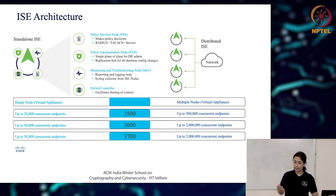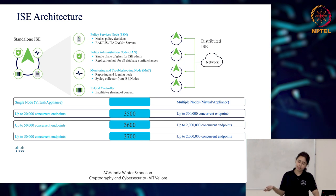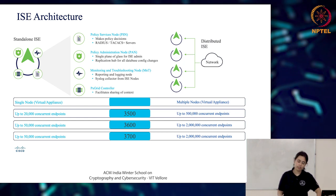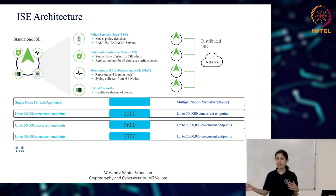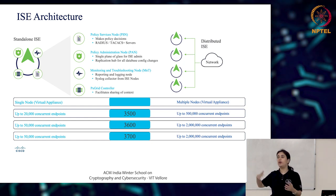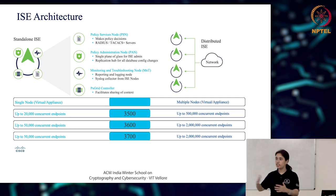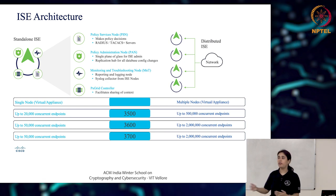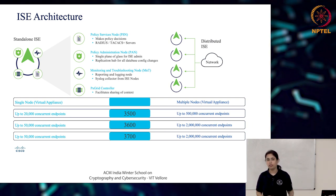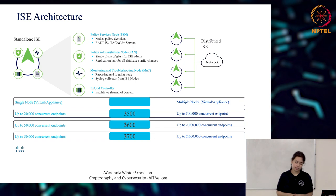Those are the three major kinds of nodes. The fourth kind is optional — not every deployment has it — it's called the PX Grid Node. This is used when you want to integrate the firewall with ISE and exchange information between the firewall and ISE, so you can have a dedicated node called the PX Grid Node for that purpose.